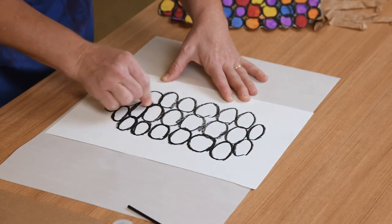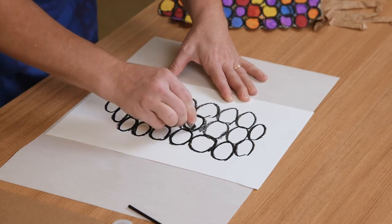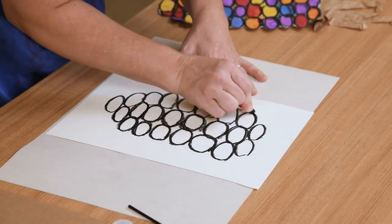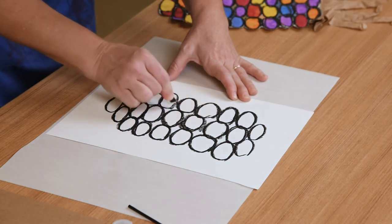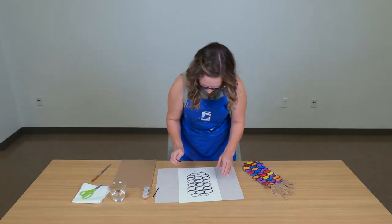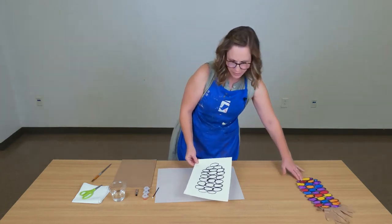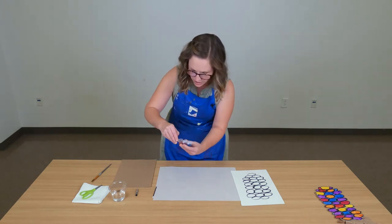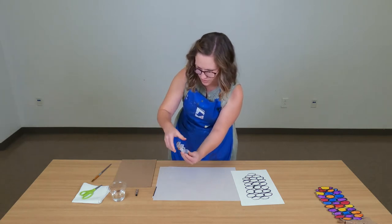Now when we add watercolor paint to the ovals that we've created with oil pastel, you'll notice that the oil from the oil pastel repels the water in the watercolor. And so that watercolor paint will not stick to the oil pastel. All right, so those are a little bit darker and I'm ready to paint.